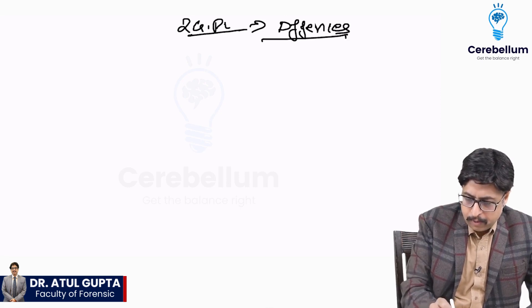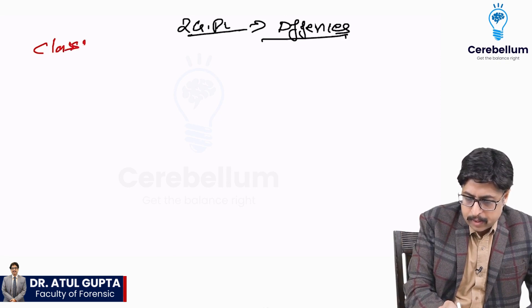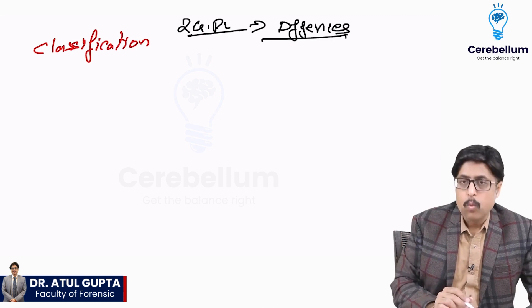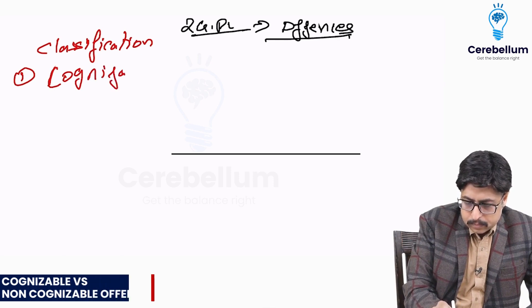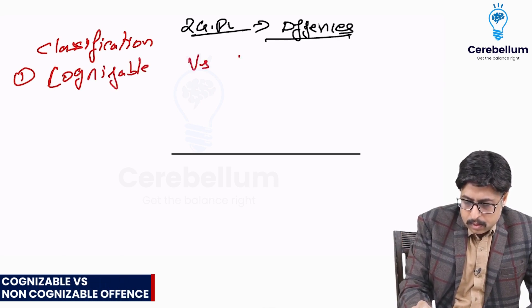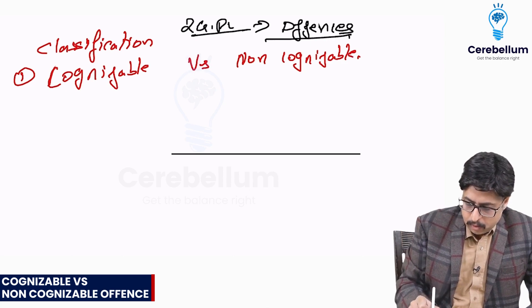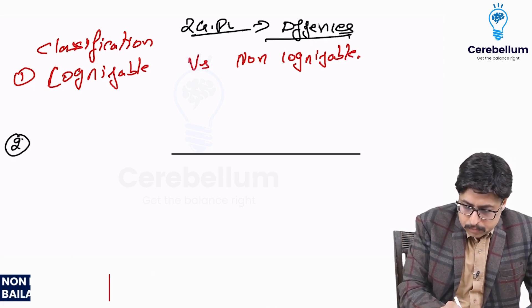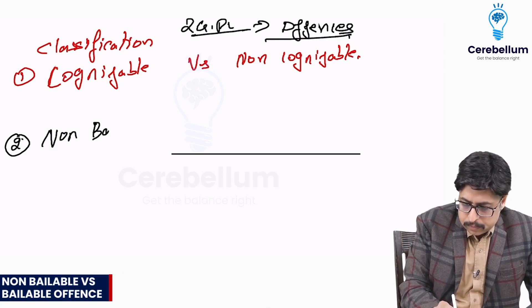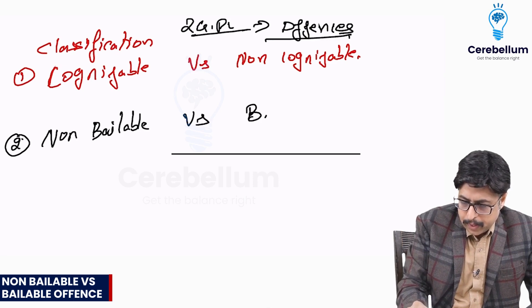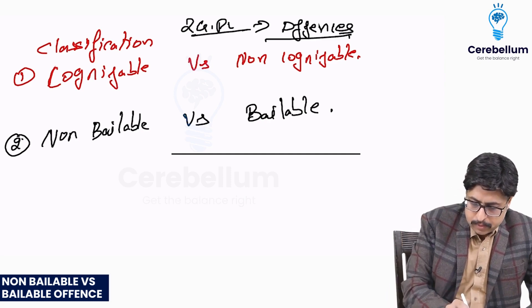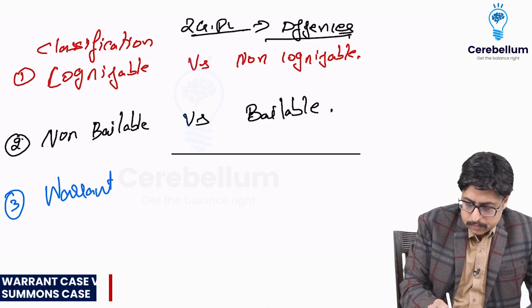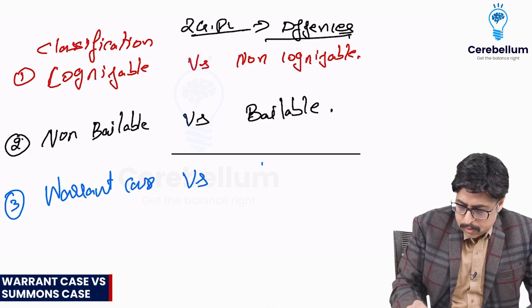Offenses can be classified in different ways. One way of classification is cognizable versus non-cognizable offense. Second way of classification is non-bailable versus bailable offense. And the third way of classification is warrant case versus summons case.